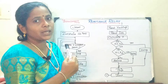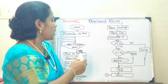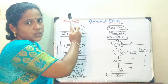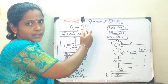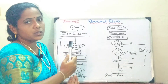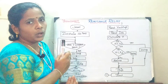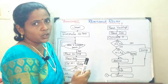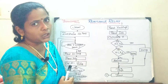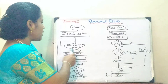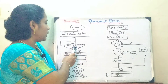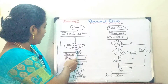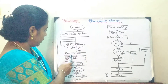Whenever the instantaneous value of the voltage is going to reach its peak and the current is at zero, you are going to measure the reactance. The first thing you are going to check is whether the voltage has crossed its peak. If yes, you proceed.